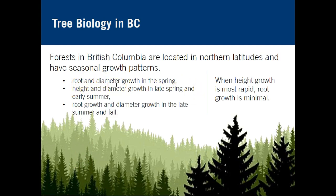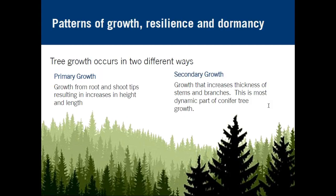Heightened diameter growth tends to happen late spring and early summer, and then a return to root growth and diameter growth in late summer and fall. What you can observe is that when height growth is most rapid, root growth tends to be minimal, and vice versa. Tree growth occurs in two different ways: primary growth and secondary growth. Primary growth refers to root and shoot tips elongating and lengthening.